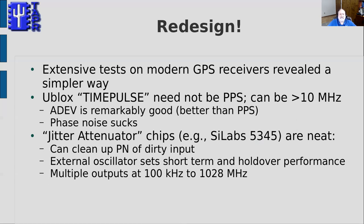The U-blox receivers have a time pulse output that's normally set to PPS — one pulse per second — but it can actually be programmed to more than 10 MHz on these modules. The output of the time pulse at RF frequencies like 10 MHz is remarkably good, actually much better than the pulse per second output, but there's a lot of jitter on the 10 MHz signal. Its phase noise is poor and you'd never be able to put that signal on the air because it would just be too ugly.